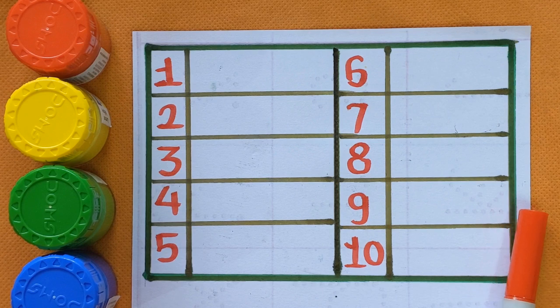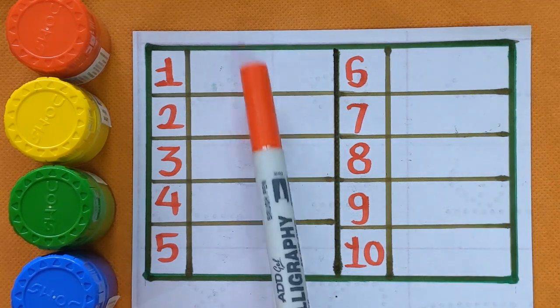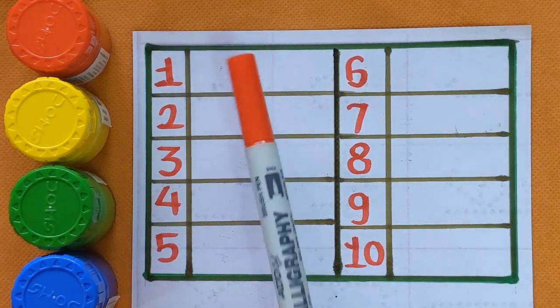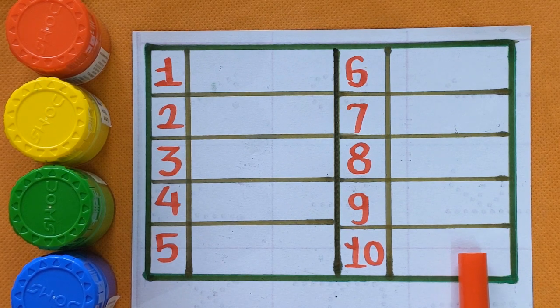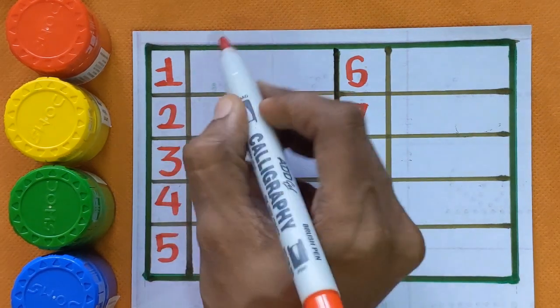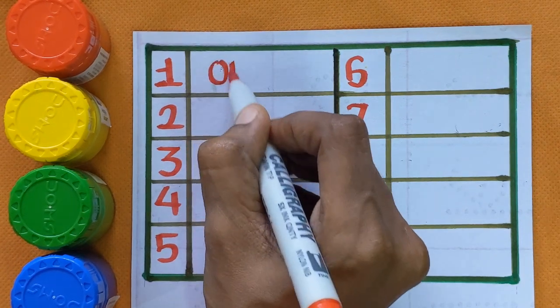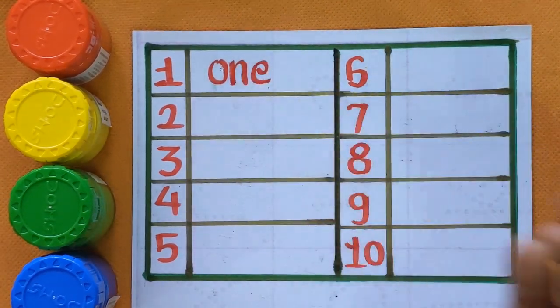Today we are going to learn how to write 1 to 10 number names in English. So let's get started. At first number 1, O-N-E, one.